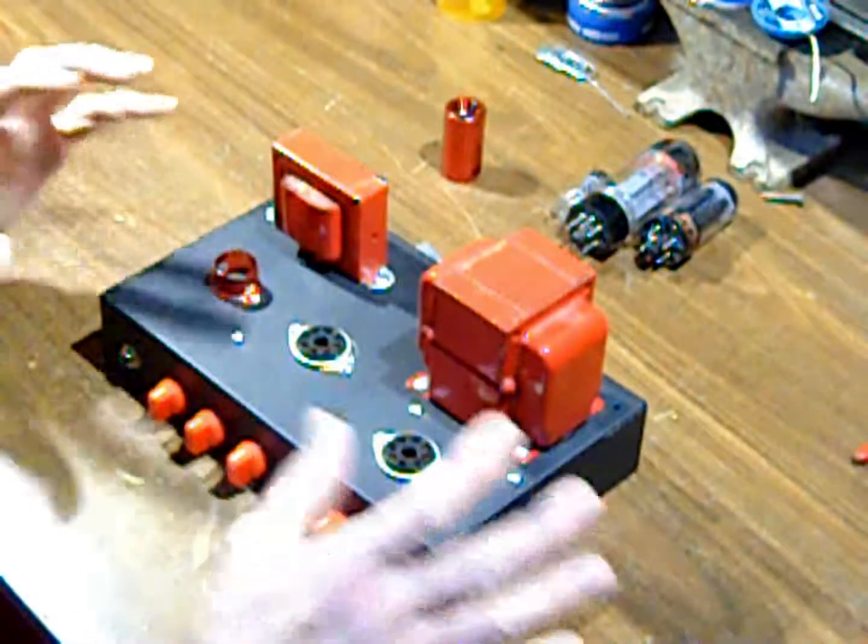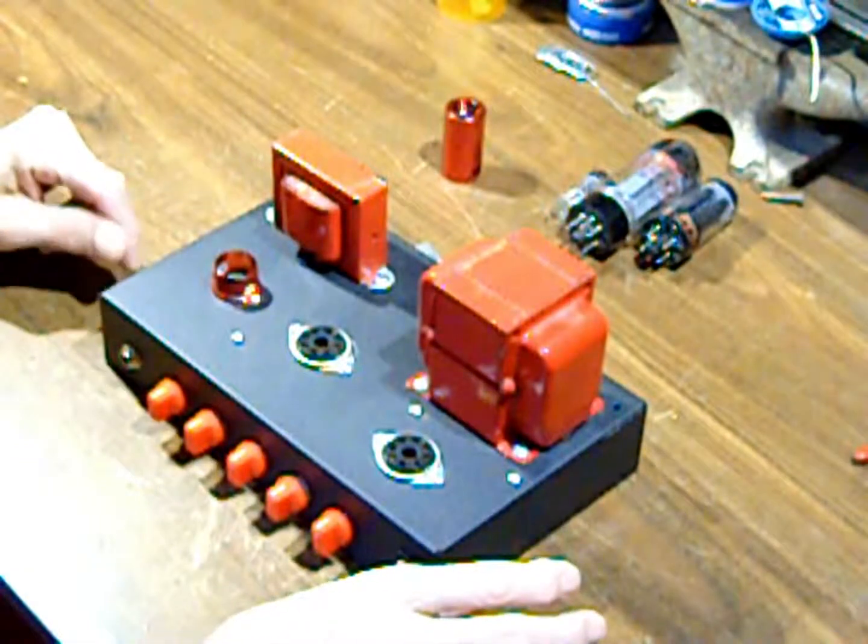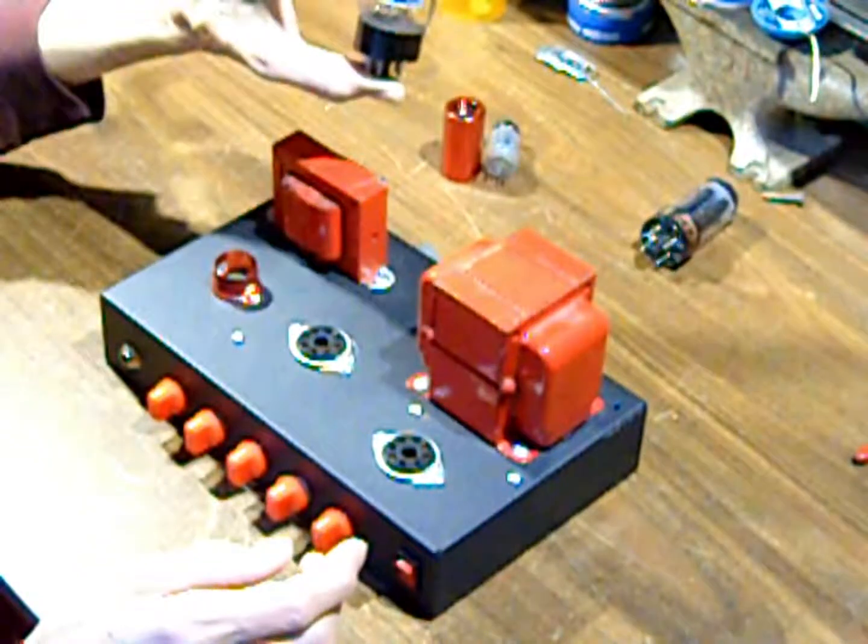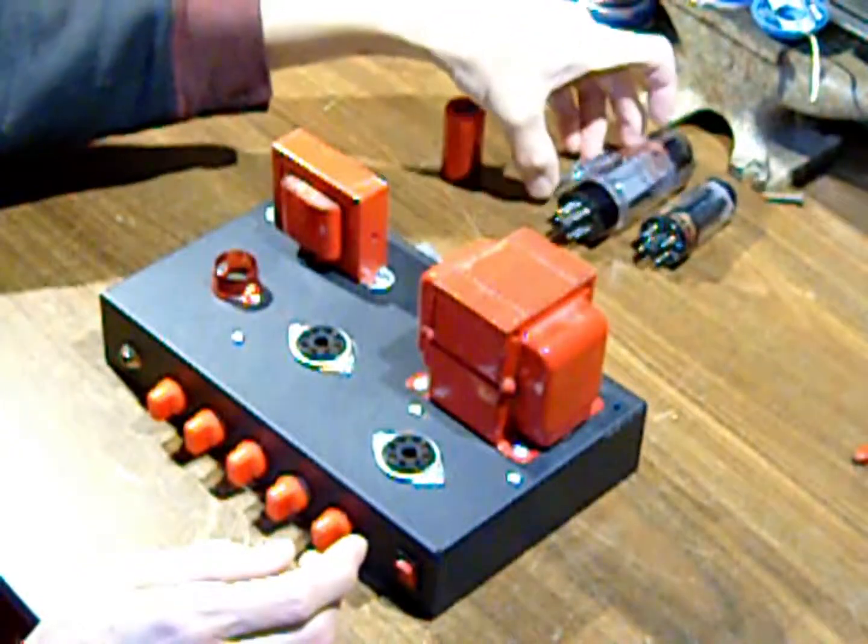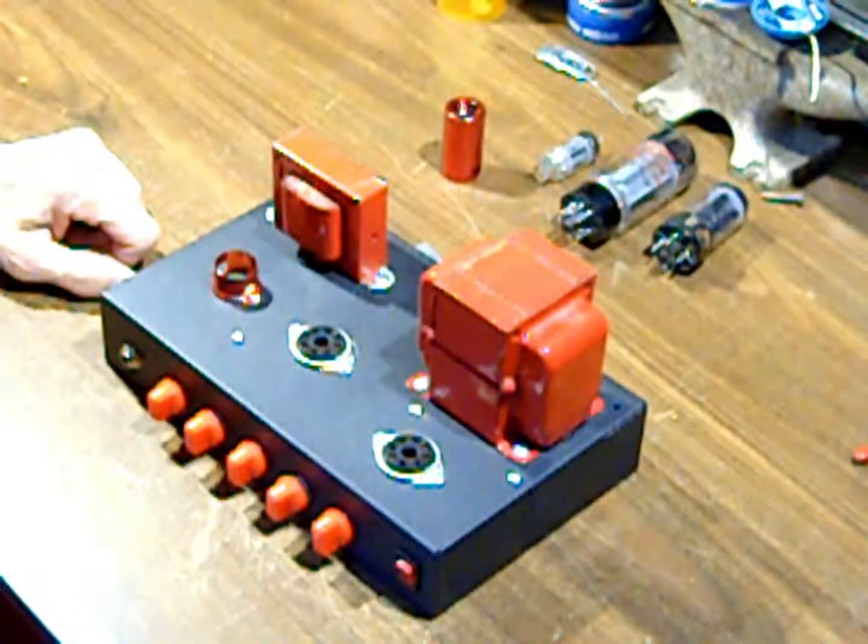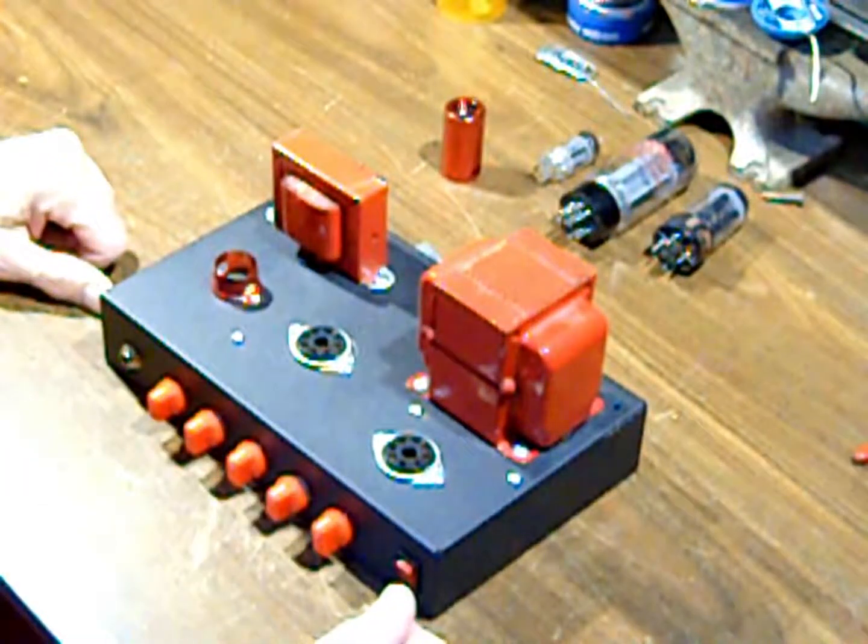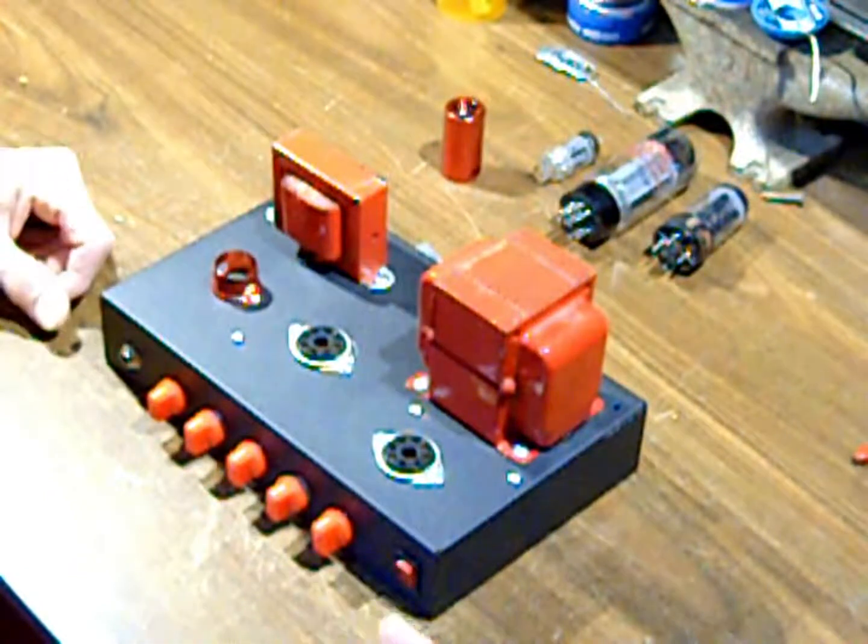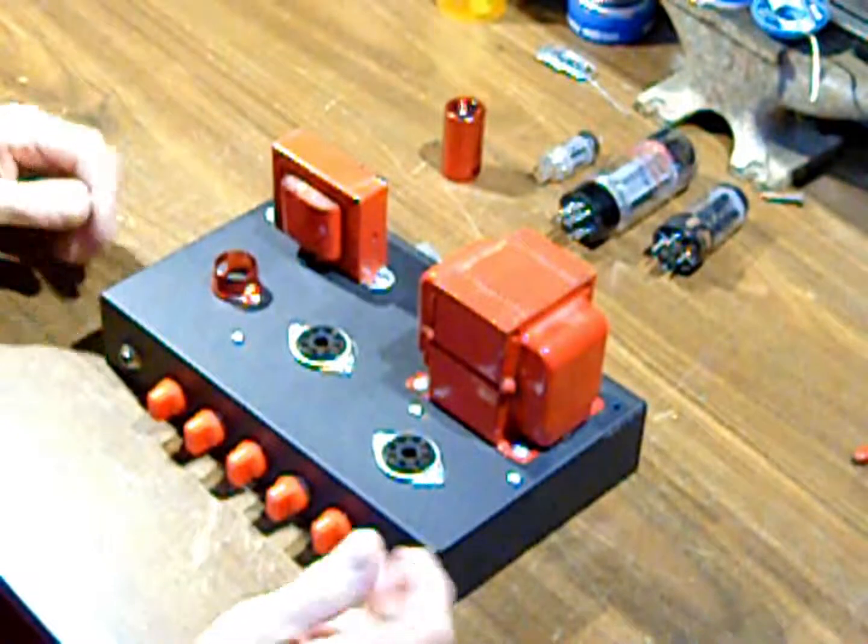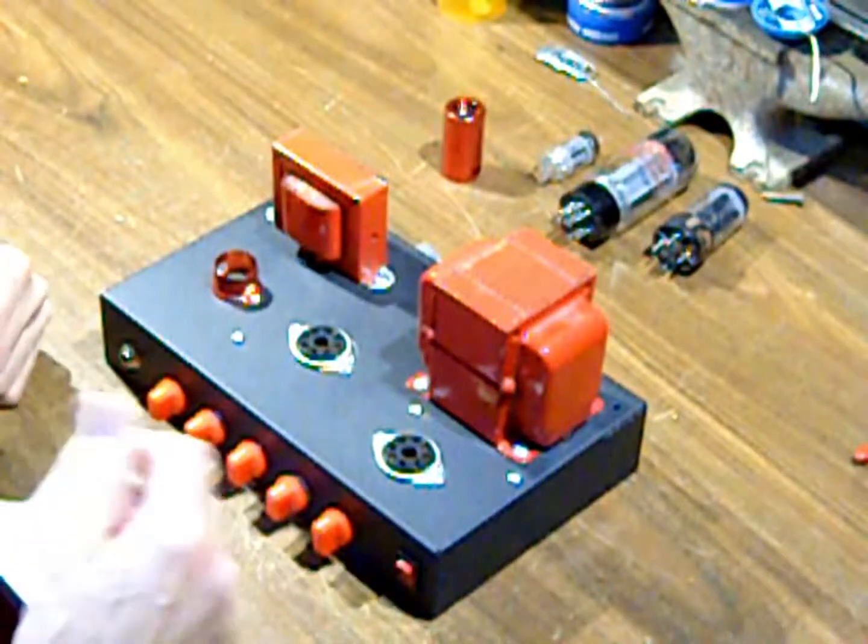Now this amp is what they call a single-ended class A amplifier. And that is because it's only got one power tube. So that makes it single-ended. And class A means that the power tube runs the full output voltage, the output signal. With a class AB or even a class A push-pull amplifier, each tube only runs part of the signal. They're a lot more efficient.